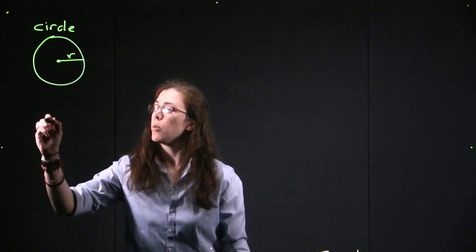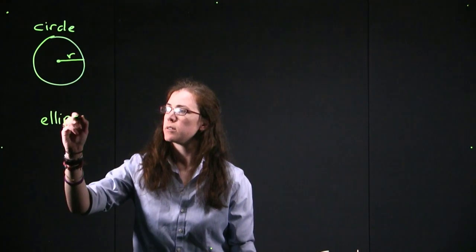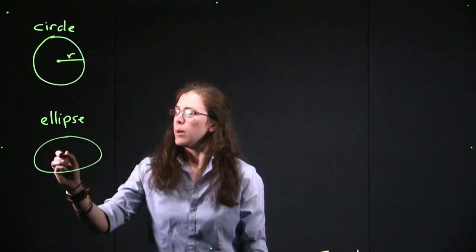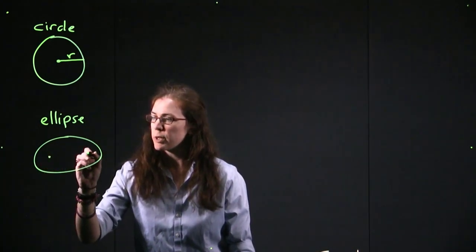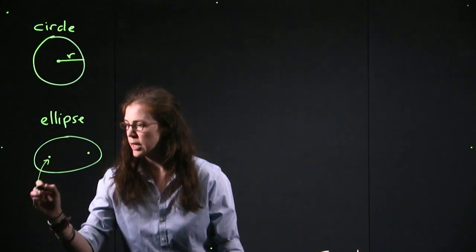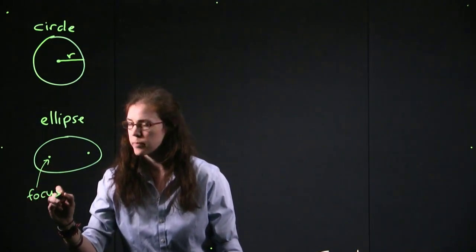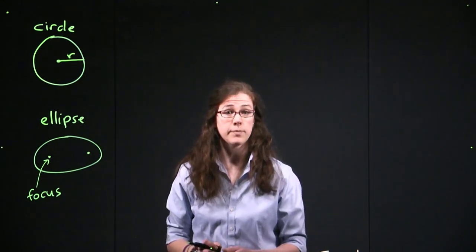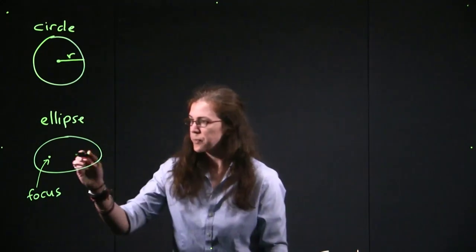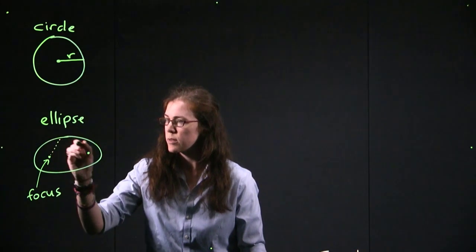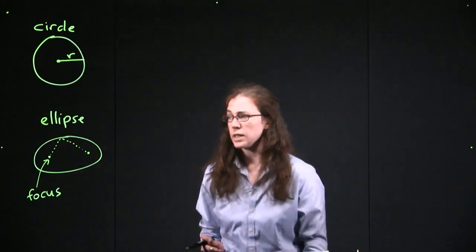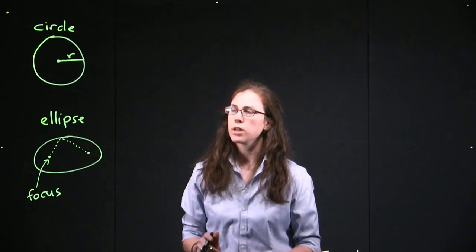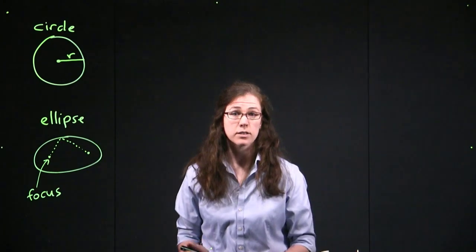For an ellipse, what we have is something that looks a little bit different. It's kind of an oval shape. But the key thing is that there are two special points. Each of those points is called a focus. And so, each of those two focus points, and the plural of focus is foci, are telling us that if we look at the distance between those two points and we add that up, that will be the same throughout the entire ellipse. Not quite what a radius of a circle is trying to tell us, but something similar.